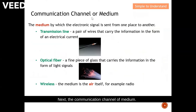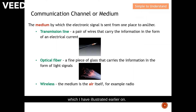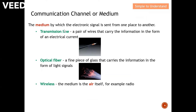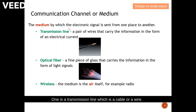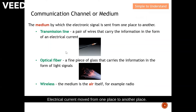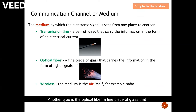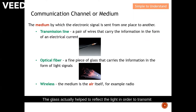Next, let's look at the communication channel or medium — the means by which the electronic signal is sent from one place to another. There are three major communication channels. The first is the transmission line, which is a cable or wire that carries information in the form of electrical current moving from one place to another. The second is optical fiber — a fine piece of glass that carries information in the form of light signals, reflecting light to transmit from transmitter to receiver.